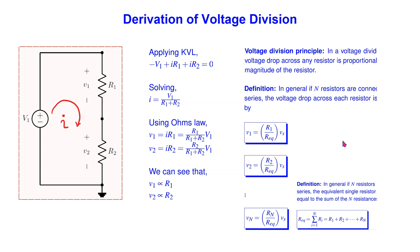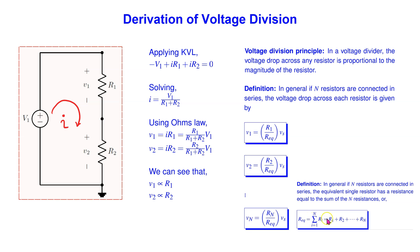The voltage division principle can be easily extended to any number of resistors connected in series. Here, Vs denotes the applied voltage source. In the numerator, we have the resistor across which we wish to determine the voltage drop. In the denominator, we have the equivalent resistance, which is given by the sum of all the resistors connected in series.